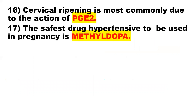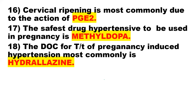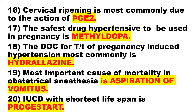Point 17: The safest antihypertensive drug to be used in pregnancy is methyldopa. Point 18: The drug of choice for treatment of pregnancy-induced hypertension is hydralazine. Point 19: The most common cause of mortality in obstetrical anesthesia is aspiration of vomitus. Point 20: The IUCD with the shortest lifespan is Progestasert.